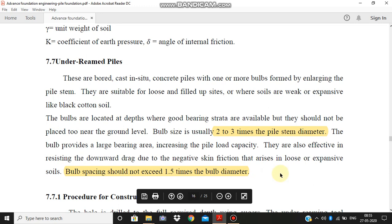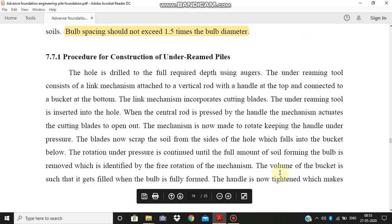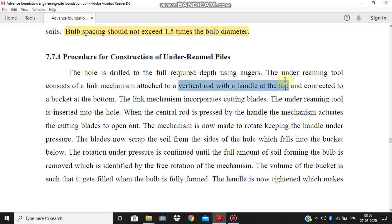And how these piles are made? What is the procedure? We will study about this procedure. The procedure for construction of under-reamed piles: first, augers are used to drill the hole in the ground. The hole is drilled to the full required depth using augers. The under-reaming tool consists of a link mechanism with a vertical rod, which has a handle at the top and is connected to a bucket at the bottom. A bucket is attached to the bottom.